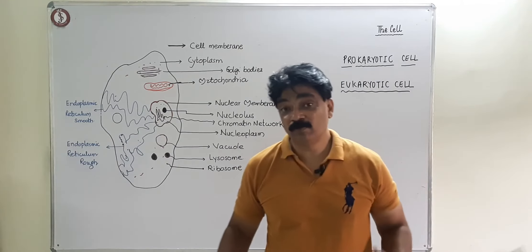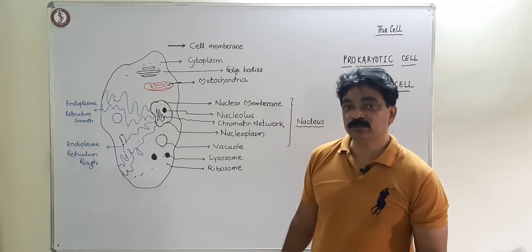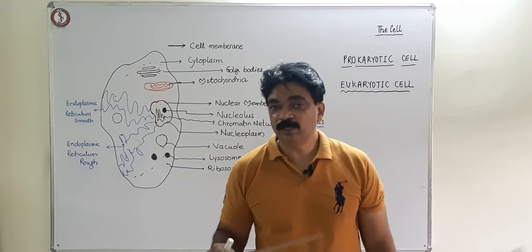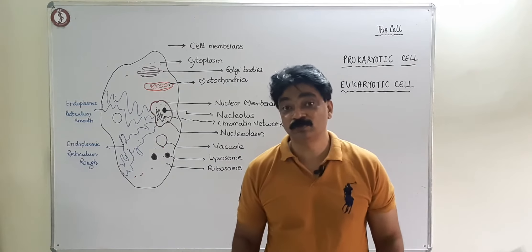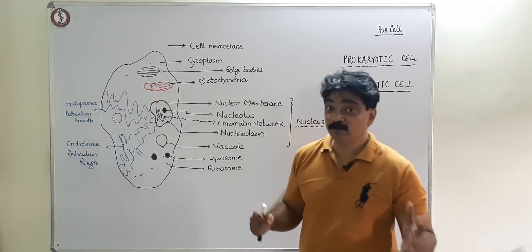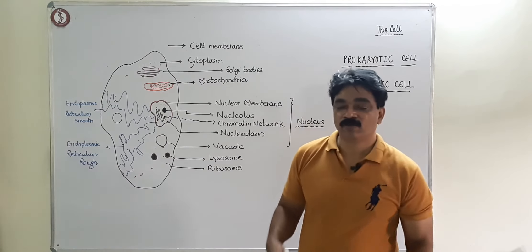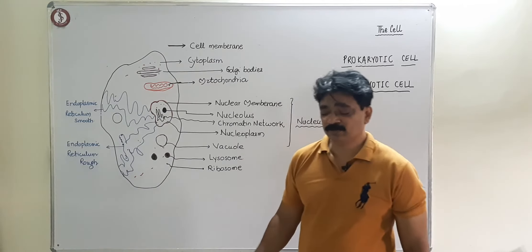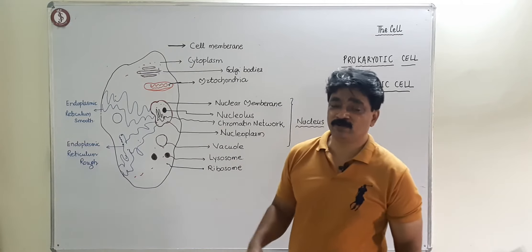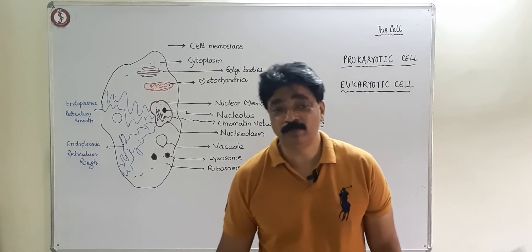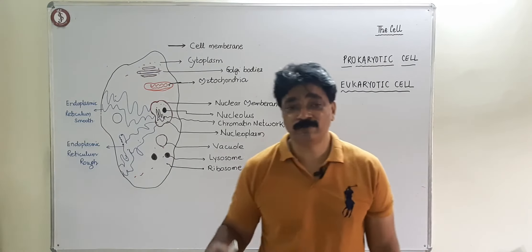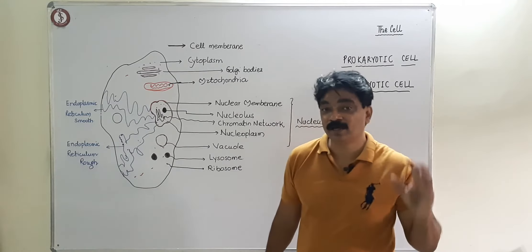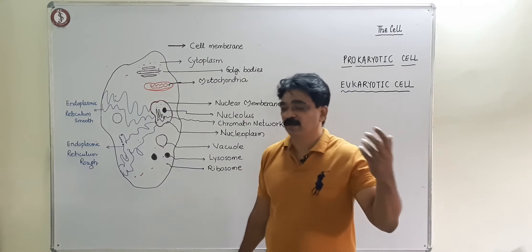The nucleus is the control center of the cell. Our nucleus contains chromosomes, which are hereditary units. The number of chromosomes decides what type of animal it is. For humans, there are 23 pairs of chromosomes. If you find a cell and count 23 pairs of chromosomes, it is a human cell. For a Drosophila fly, there are 6 pairs. So the number of chromosomes varies.